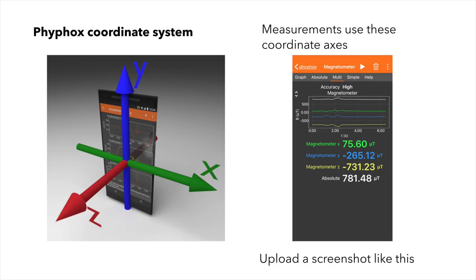Once we've collected the data, we'll need to use the coordinate system inside the Phyphox app to interpret the direction of the magnetic field. You should already have magnetic field information that looks like the screenshot on the right of this slide. Go ahead and upload that to eClass.